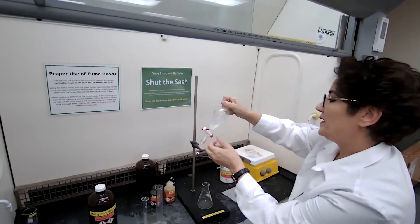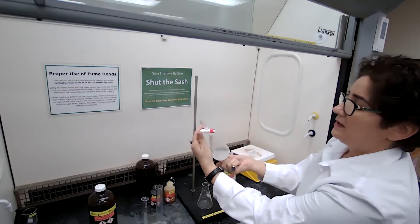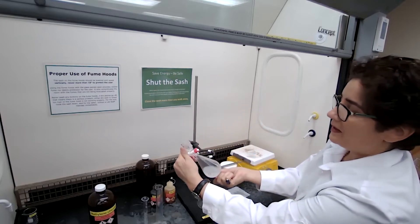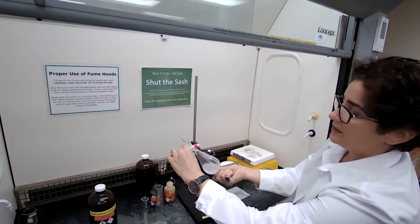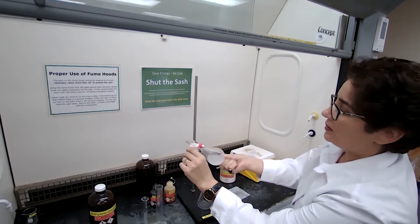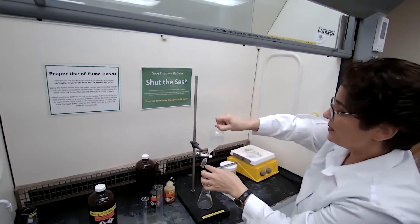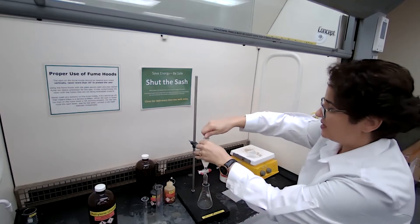Often when we are doing the extraction, we must do the venting part to release the pressure. Remove the top, the glass stopper, to get any buildup gas removed from the vial.